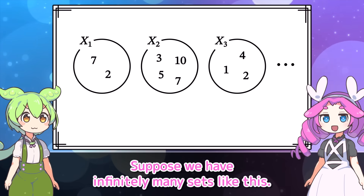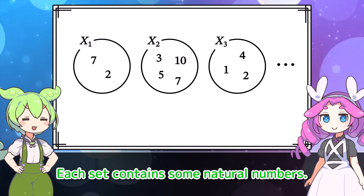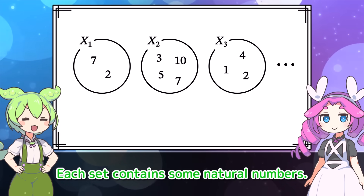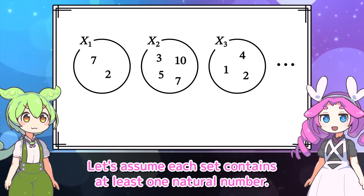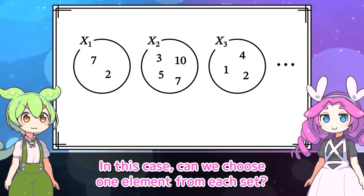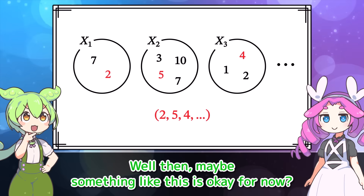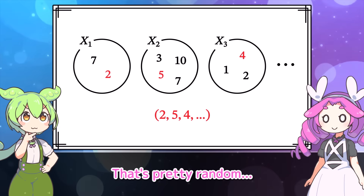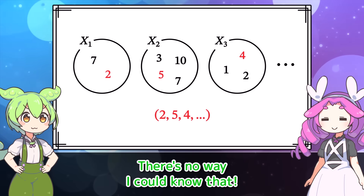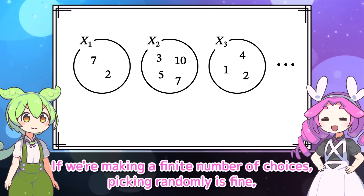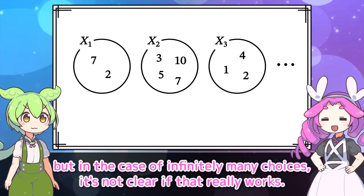Suppose we have infinitely many sets like this. Each set contains some natural numbers. Let's assume each set contains at least one natural number. In this case, can we choose one element from each set? Well, maybe something like this is okay for now? That's pretty random — there's no way to know how this continues. If we're making a finite number of choices, picking randomly is fine. But in the case of infinitely many choices, it's not clear if that really works.